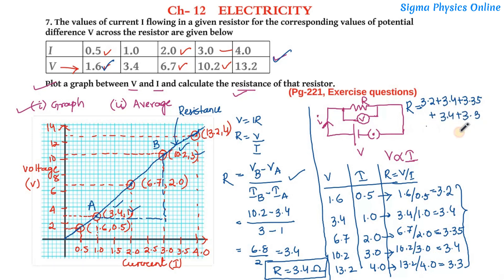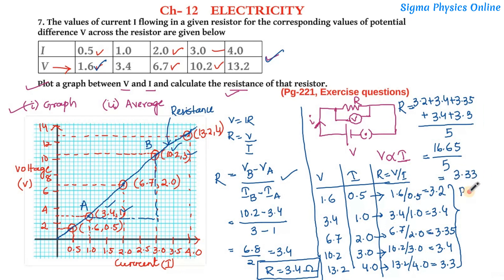Which comes to be 16.65 by 5, which is 3.33. So the value of R which we got is 3.33 ohm. Now this is the value of the resistance which we get from the practical observation, that is if we conduct Ohm's law practically in the lab we get this value of R.